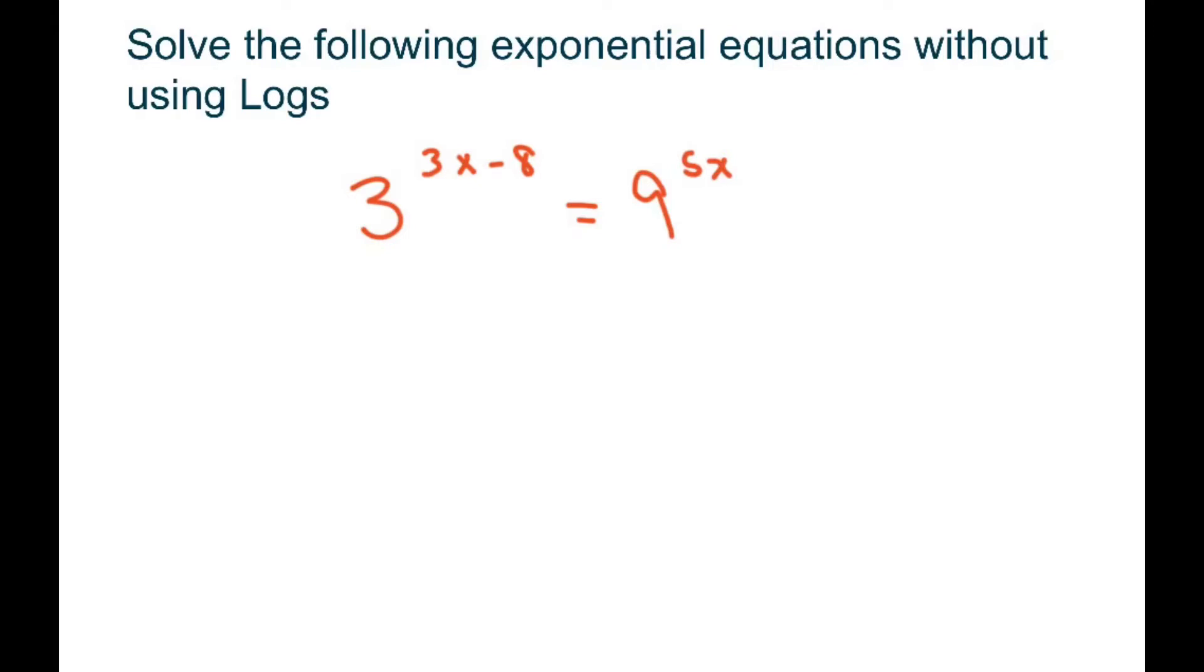So when you're solving these, we want our bases to be the same. These are the bases and you want them to be small. So what we're going to do is write this as 3 raised to the power 3x minus 8. I'm going to write this as 3 squared and then you multiply whatever we have here.